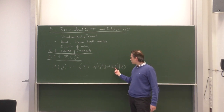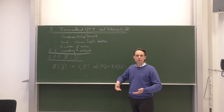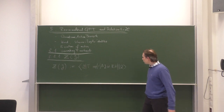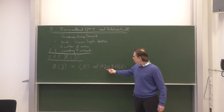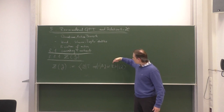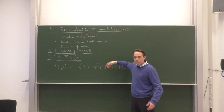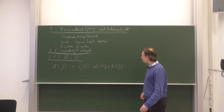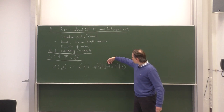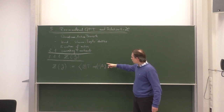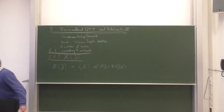The index i runs over all types of fields in our theory — maybe the photon field, the electron field, the Higgs field, whatever. For each such type of field operator, we have a so-called source. This is a source for the respective quantum field, and it is a number-valued, non-operator function — it is a test function, mathematically speaking, which is sufficiently differentiable and continuous, such that you are able to take functional derivatives with respect to these sources J.